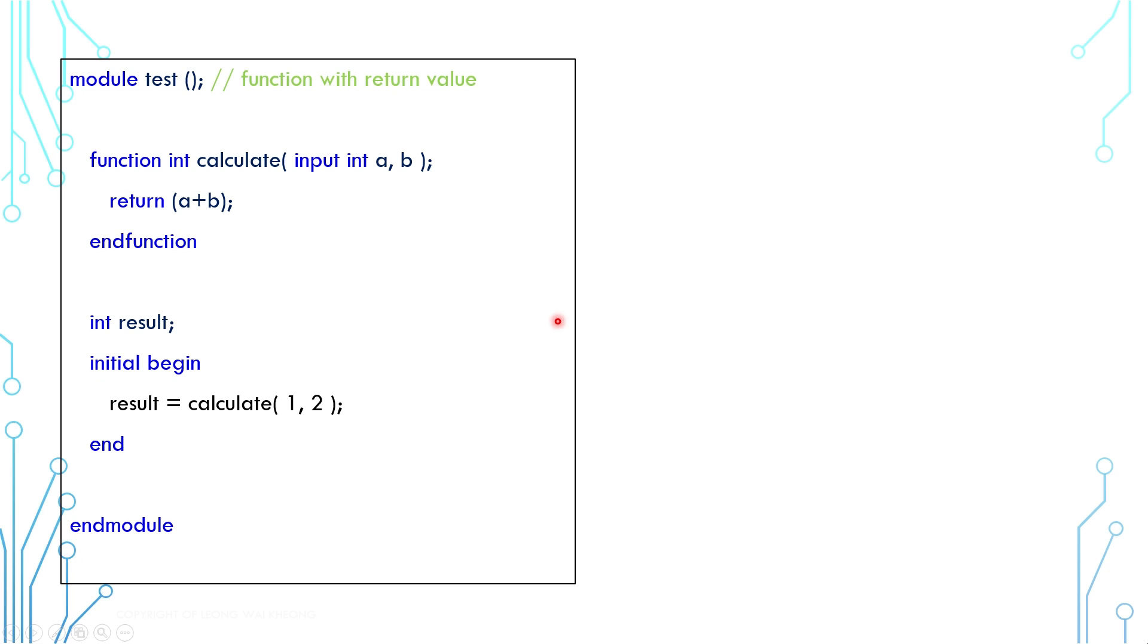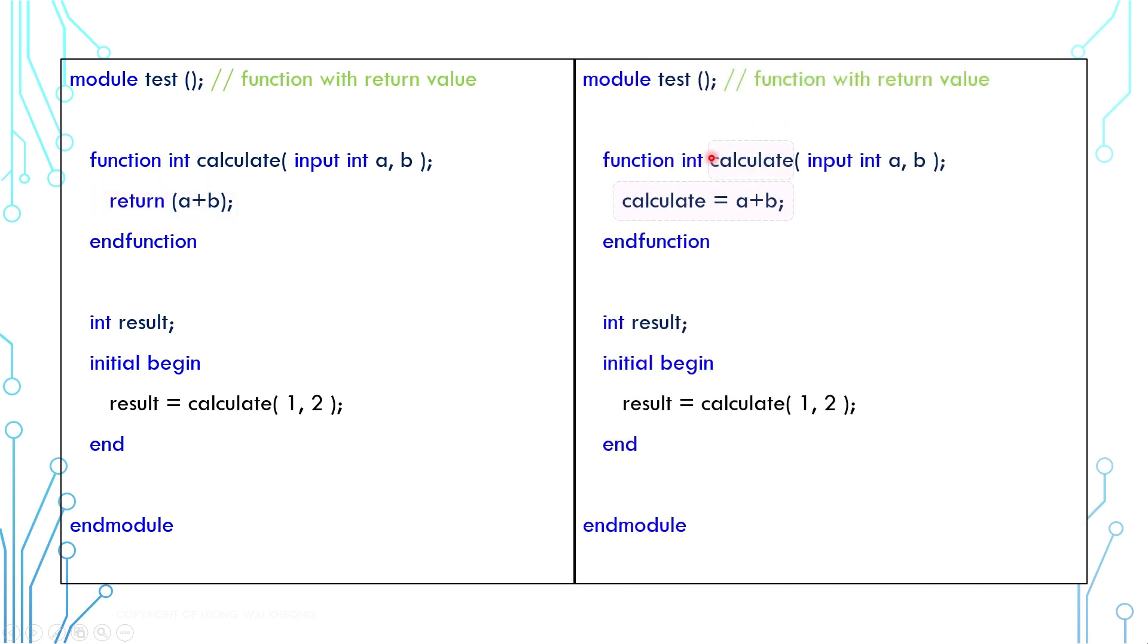Since we are talking about return value, here's a side topic. There are two ways to return a value. First is the return keyword. The second one is by using the function name. Generally, the function name also serves as a return variable. The code here works just the same as the return keyword.